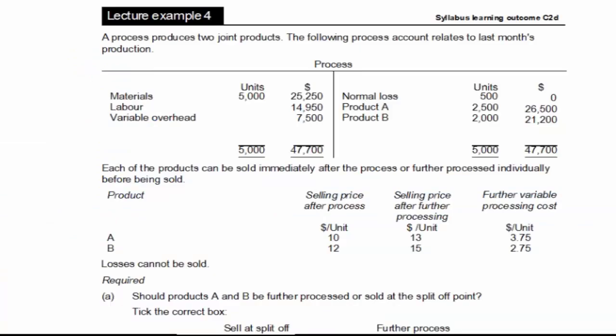In lecture example four, we're going to have a look at the two decisions that I've mentioned previously. First of all about further processing and secondly about process viability. But first of all, let's just have a look at the process account. Now process accounts are used in process costing. And you can see on the left, we've got the things that are coming into the process. And on the credit side, we've got the things that are going out of the process. So we've got our materials, our labour, and our variable overhead. And these are our joint costs.